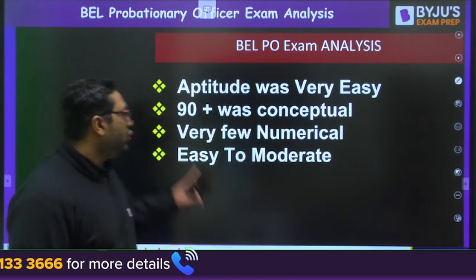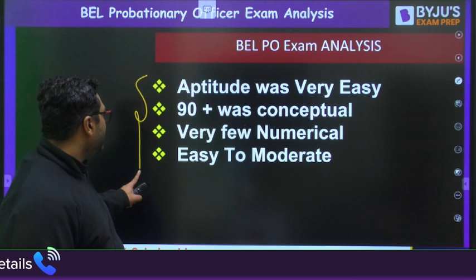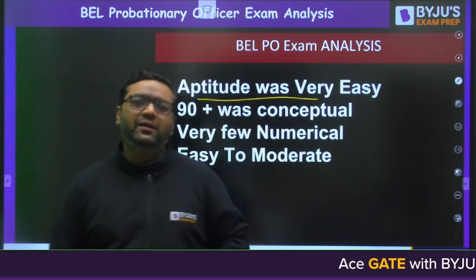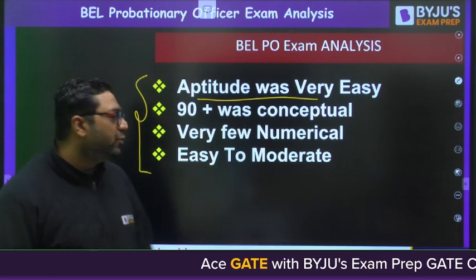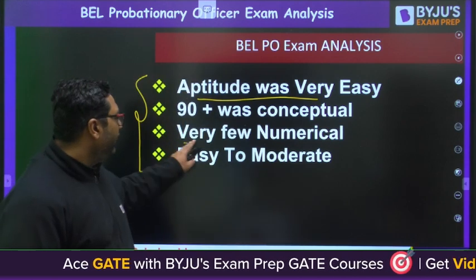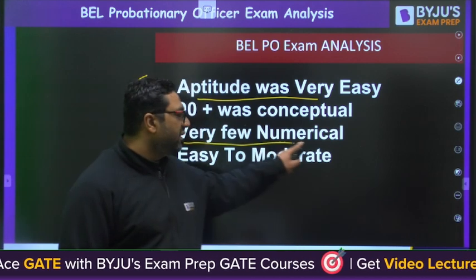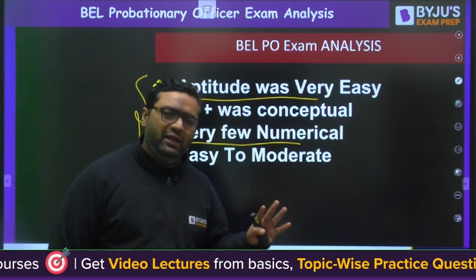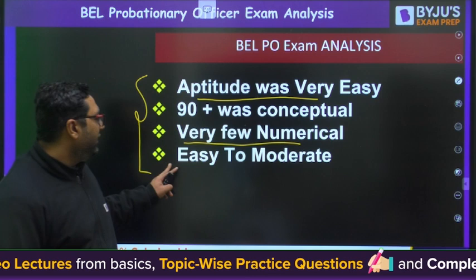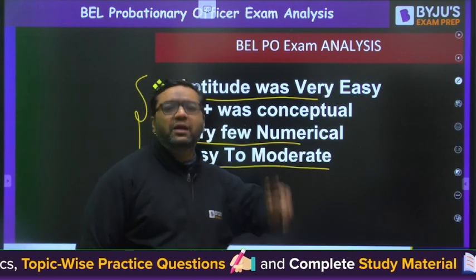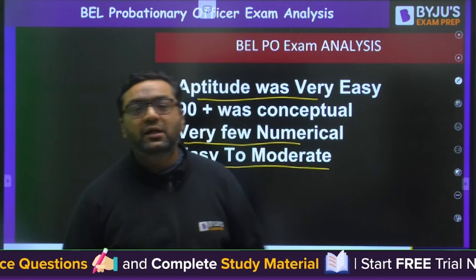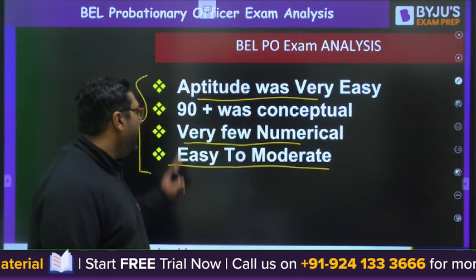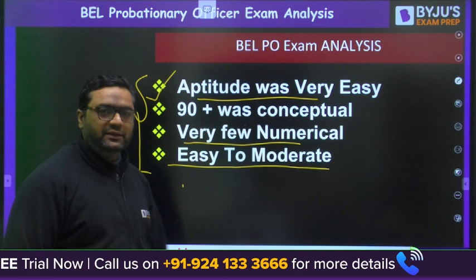These are the highlights of today's paper. First highlight: aptitude was very easy. As students who appeared in the paper were saying, the aptitude part was extremely easy and very few numericals were there — hardly five or six numericals. All others are theoretical conceptual questions, and the level was easy to moderate overall, and very easy for aptitude.